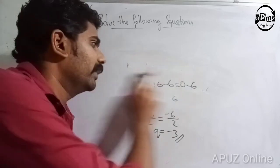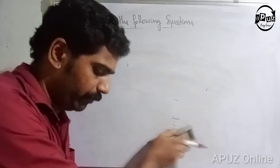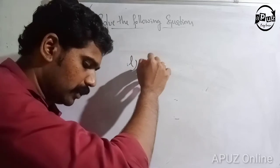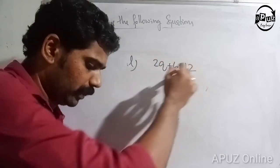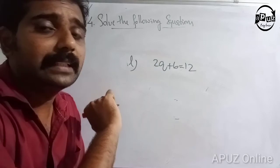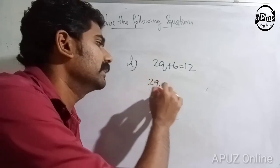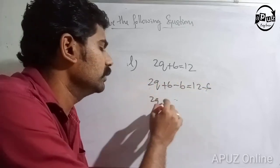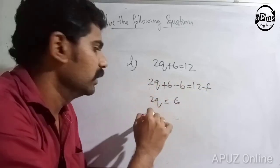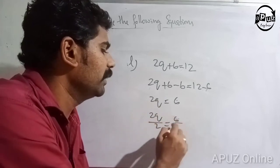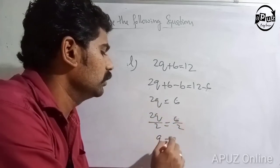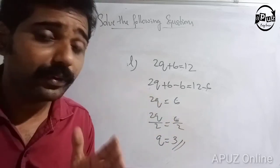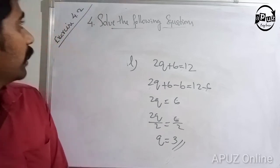Last question: 2q plus 6 is equal to 12. Subtract 6 from both sides: 2q plus 6 minus 6 is equal to 12 minus 6. That is 2q is equal to 6. Divide by 2: 2q by 2 is equal to 6 by 2, so q is equal to 3. This is the answer. This is the exercise of 4.2.